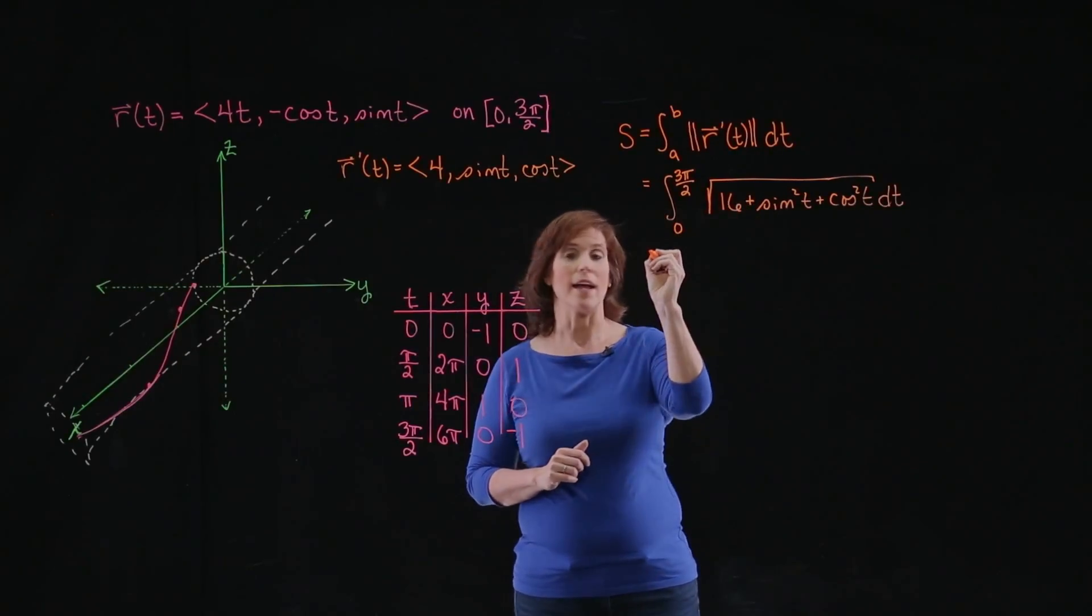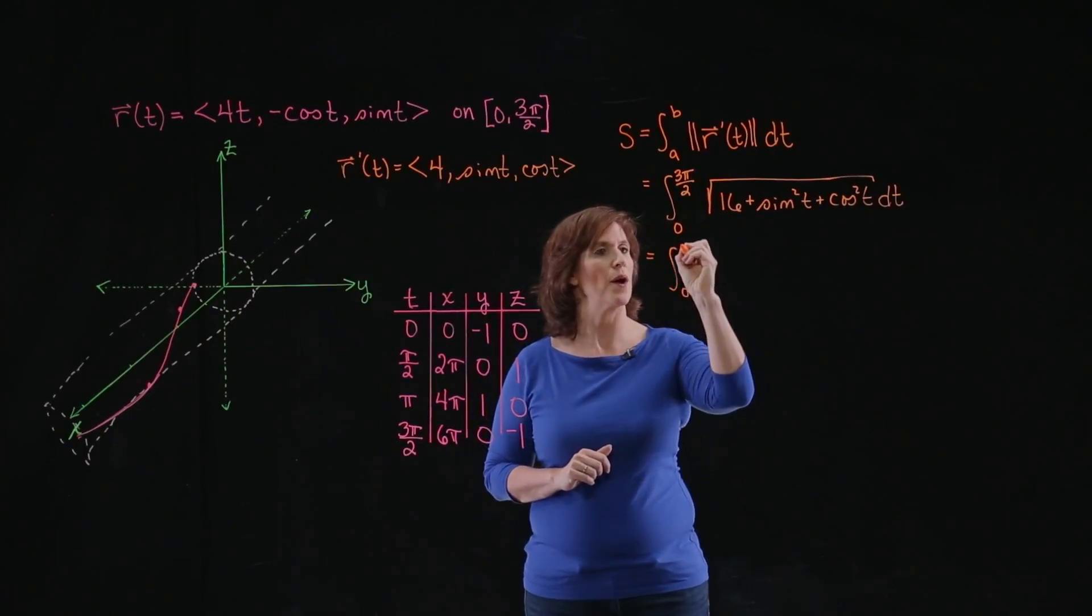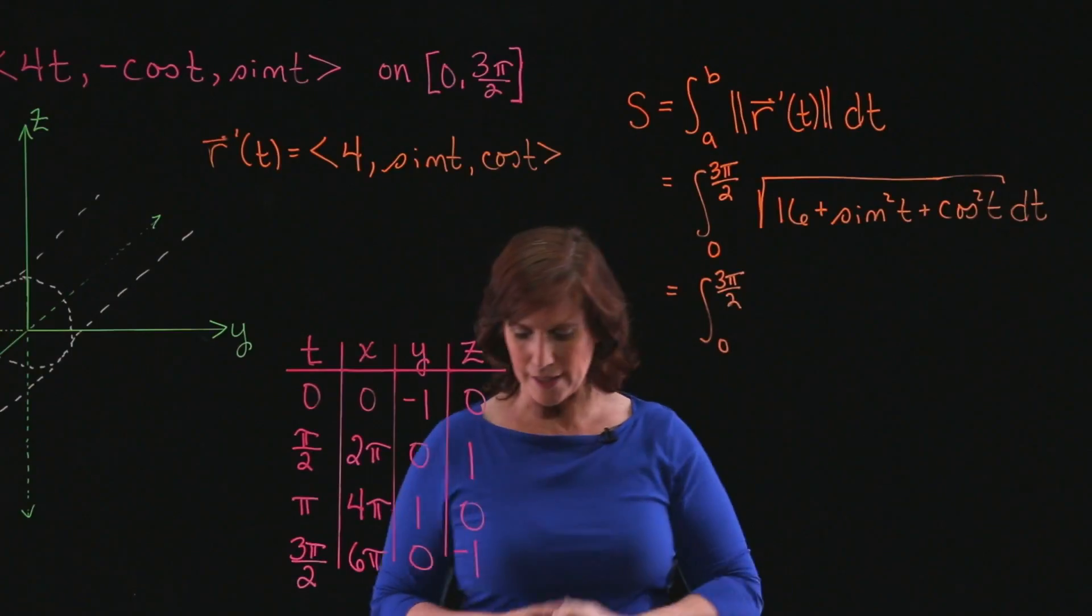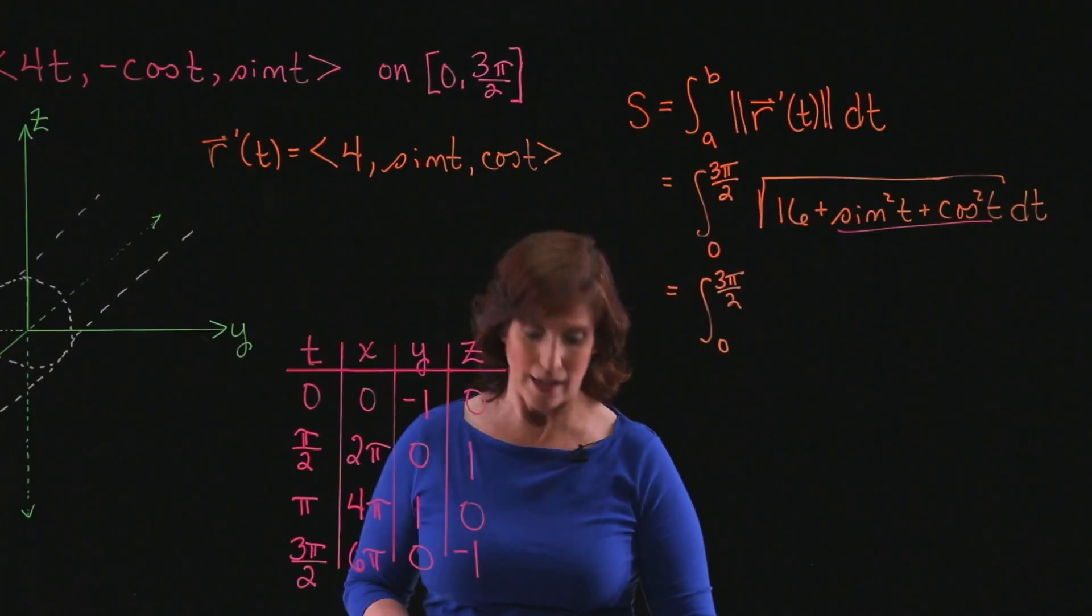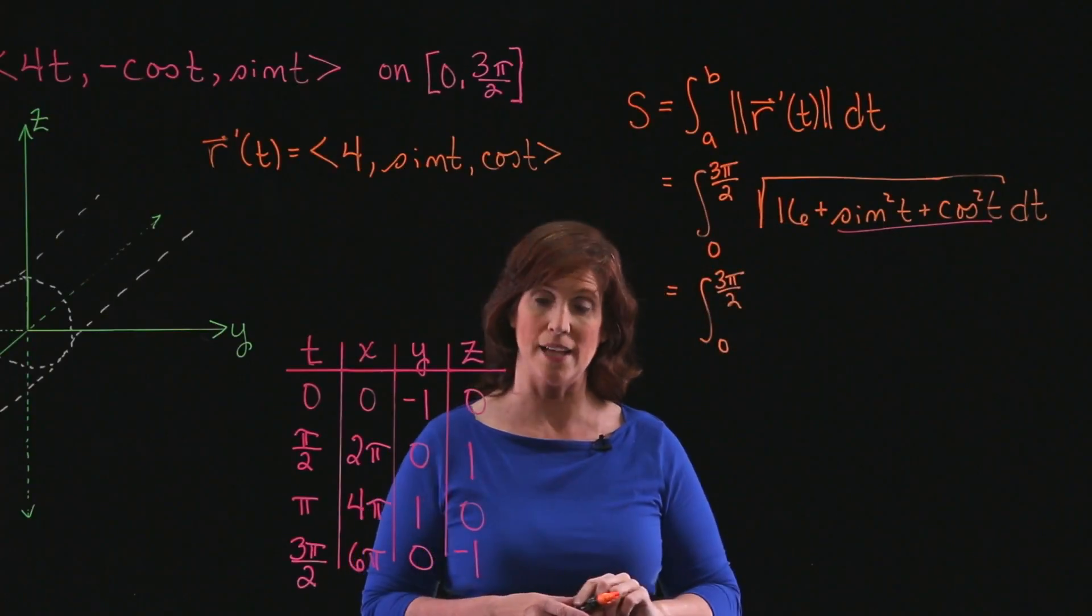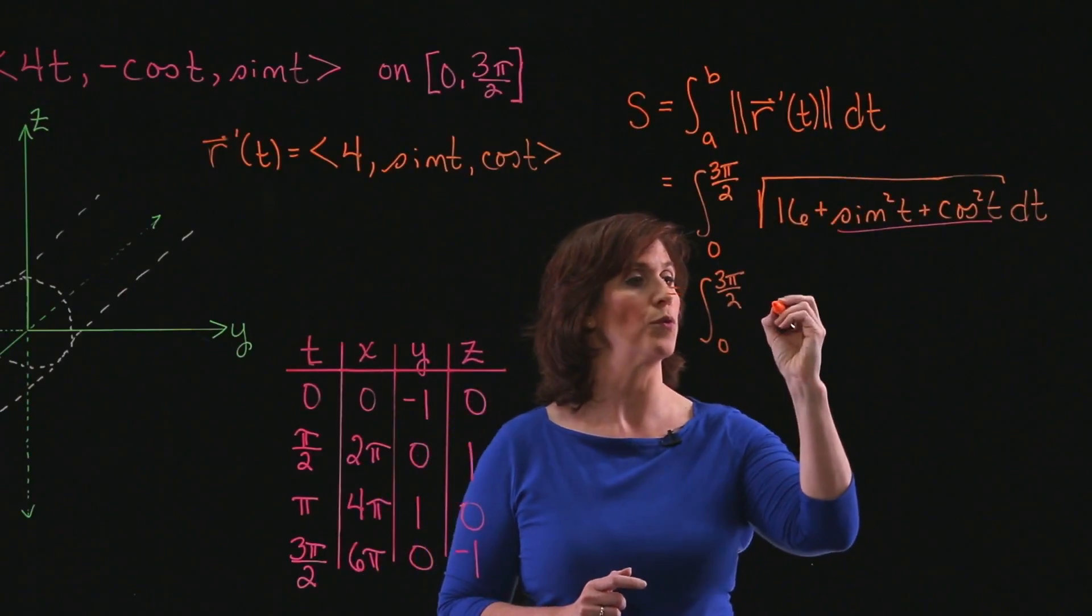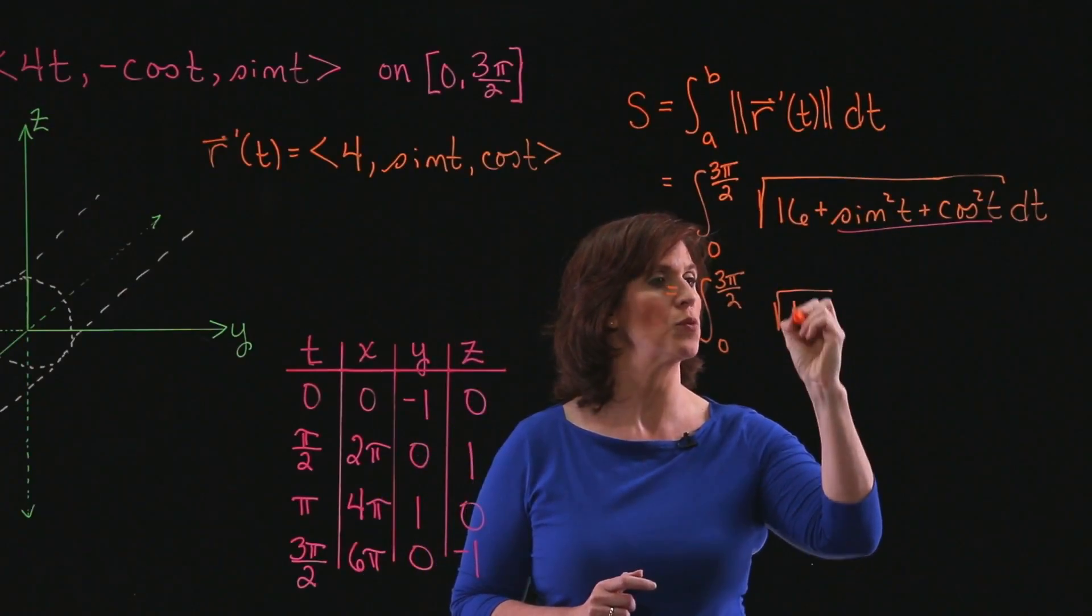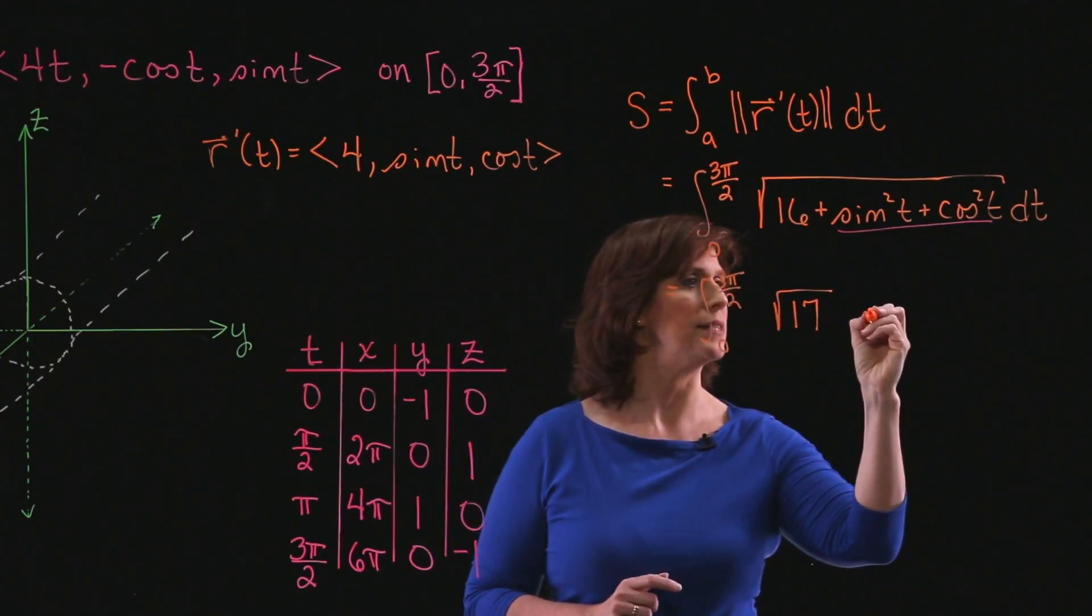Let's simplify that integrand. I'll have the integral from 0 to 3π/2. And notice that I have sin² plus cos² underneath that radical. We know that sin²(t) + cos²(t) equals 1. So that entire radical will reduce to simply the square root of 17, because it's 16 plus 1, dt.